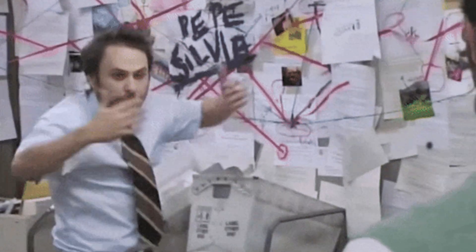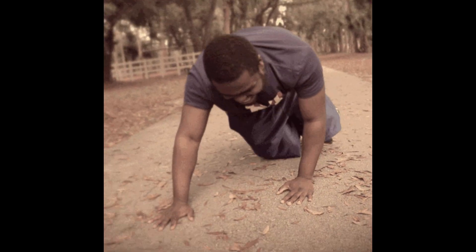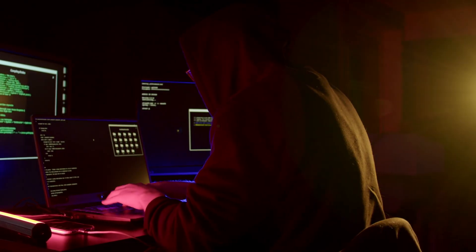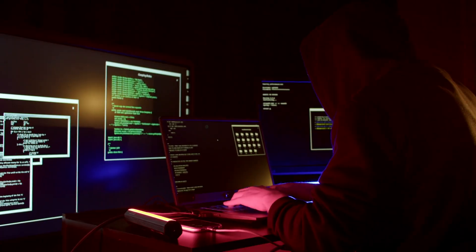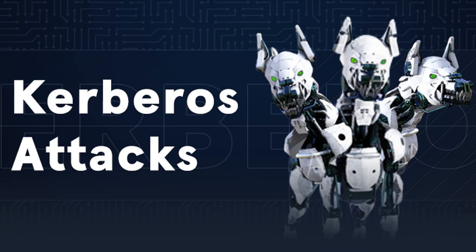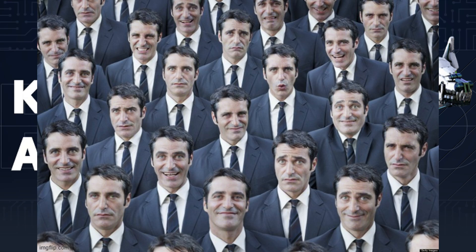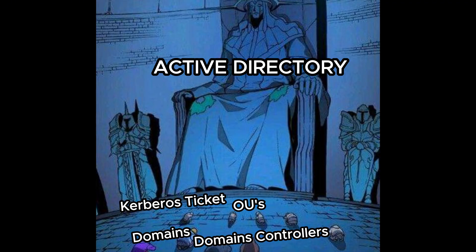Attackers don't magically hack AD — they chain weaknesses. First, they recon: map users, groups, and trusts to find the shortest path to privilege. Then they get an initial foothold via phishing or a compromised workstation and harvest credentials from host or network memory. With credentials, they move laterally to more valuable hosts and escalate privileges by abusing delegation, group memberships, or weak service account secrets. A large class of attacks abuses Kerberos ticket requests, forged tickets, or replication features to obtain domain-level credentials. Finally, they build persistence so they survive cleanup.